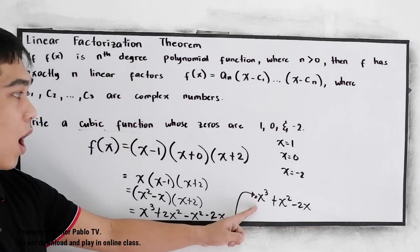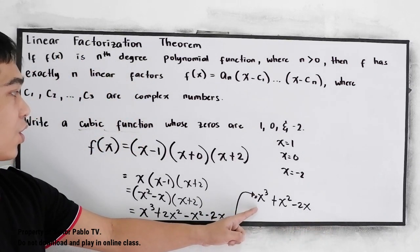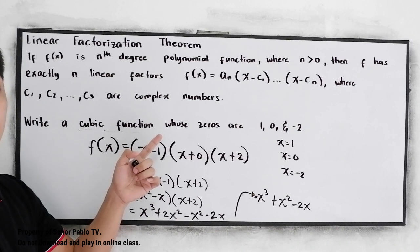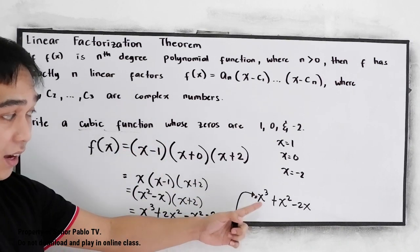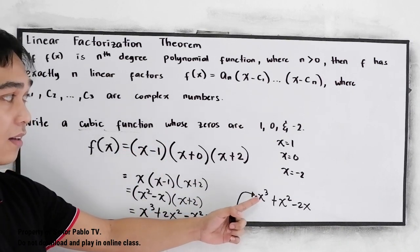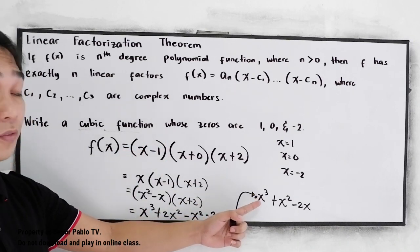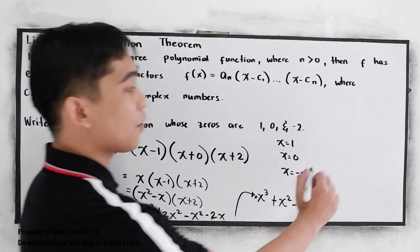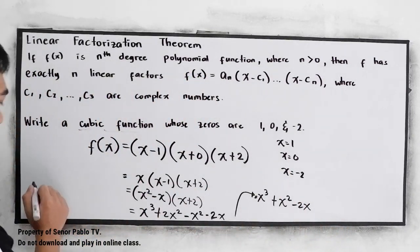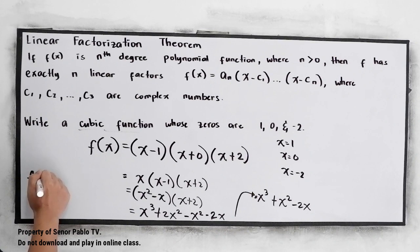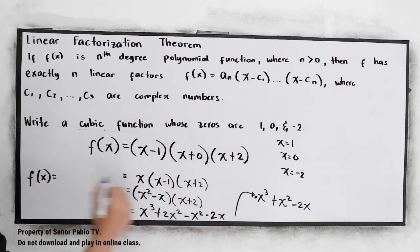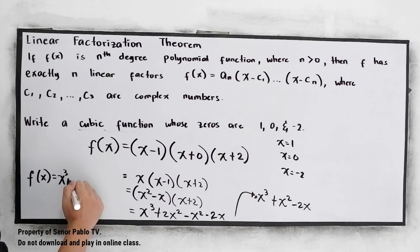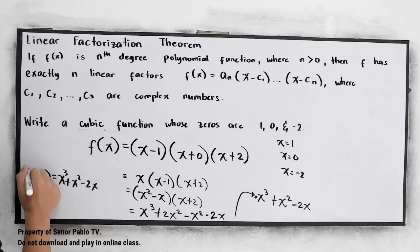This is now our cubic function. Check: our exponent is 3, so it has a degree of 3 — this is a cubic function. So our function is x cubed plus x squared minus 2x.